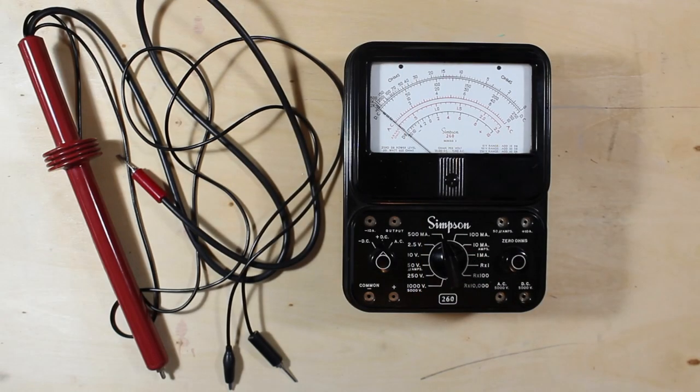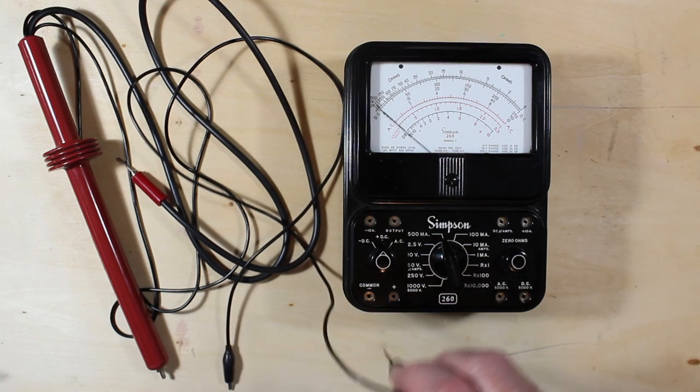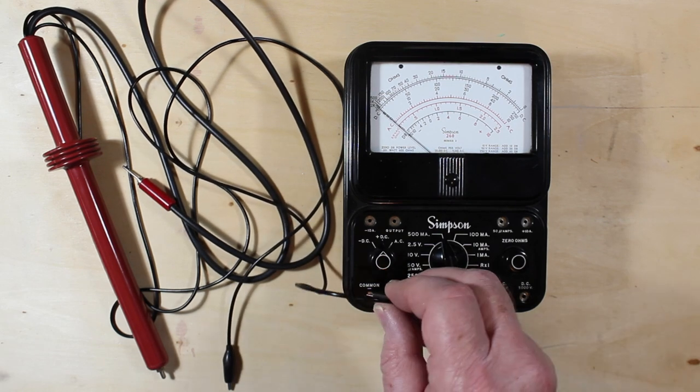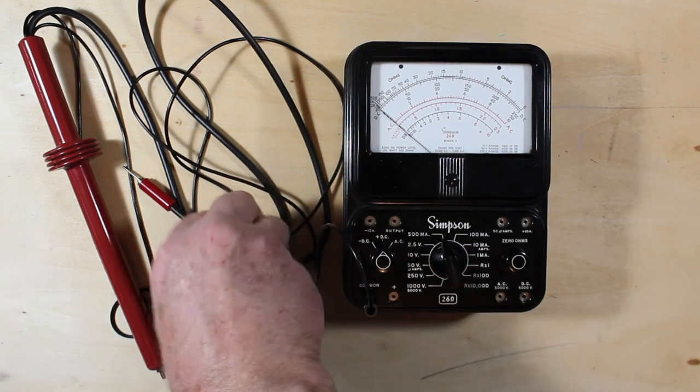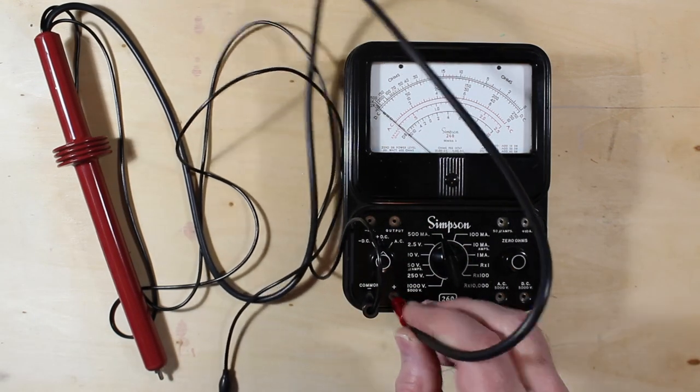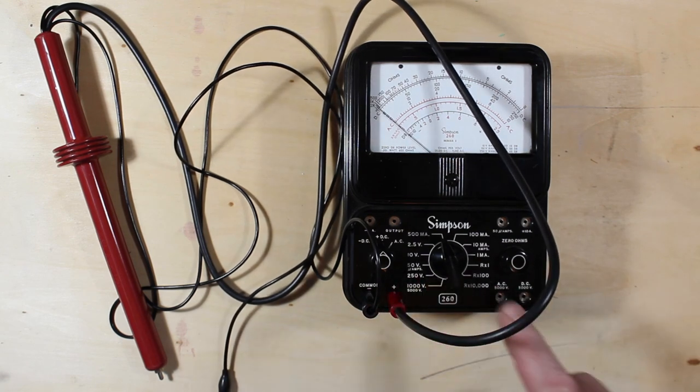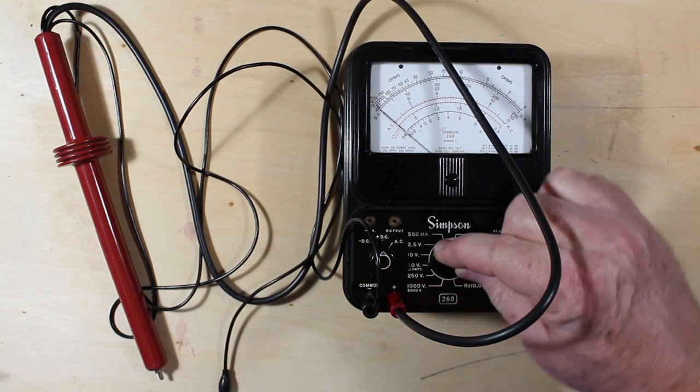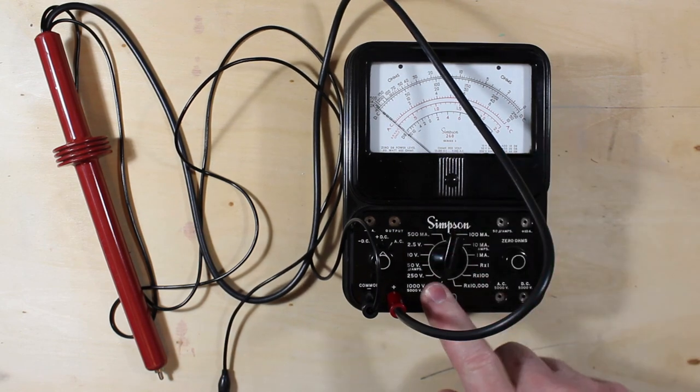So to connect the high voltage probe into the Simpson meter, you would take the negative black and hook that into the negative side. The positive lead, red here, hook that into the positive connection down here. Switch the meter to a 1,000 volt selection, right down here.